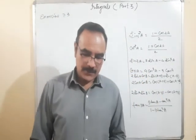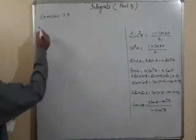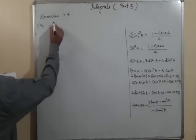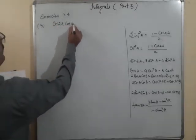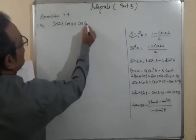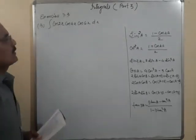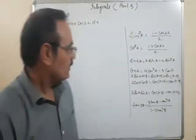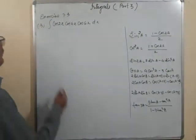Question number 3: integrate cos2x·cos4x·cos6x dx. Here we use 2cosA·cosB = cos(A+B) + cos(A−B). In the first two terms, multiply and divide by 2, so I = (1/2)∫2cos2x·cos4x·cos6x dx.